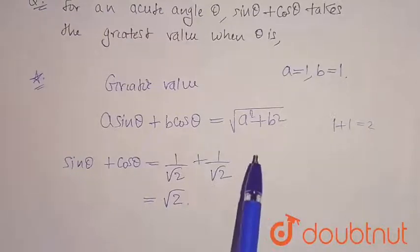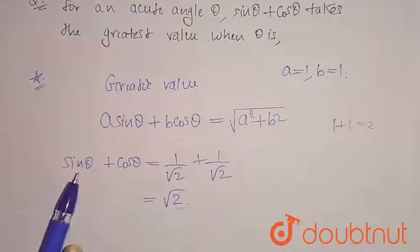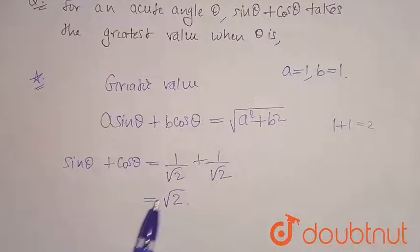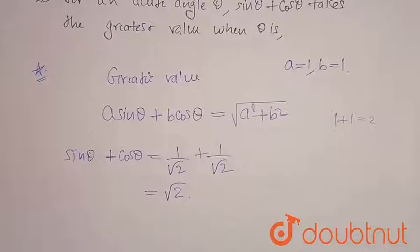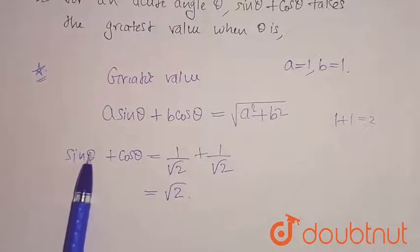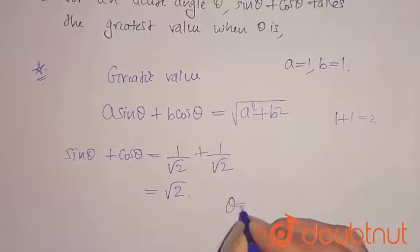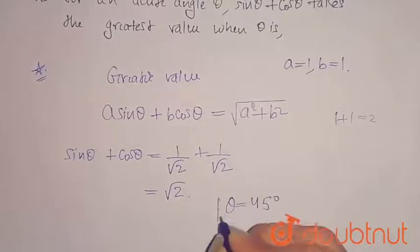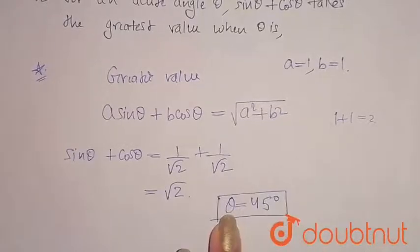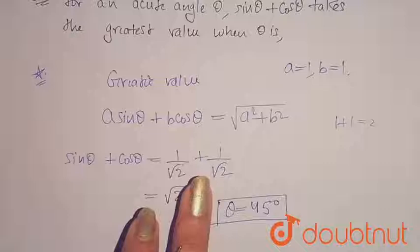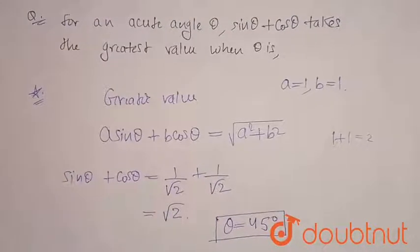So I am checking what is the value of theta. If I add one by root two plus one by root two, then only I will get root two. I will get one by root two at which angle—when my theta angle will be 45 degrees. So sine 45 degrees is one by root two and cos 45 degrees is one by root two. It means that my theta equals 45 degrees. So for this value of theta, my given equation will have the greatest value.